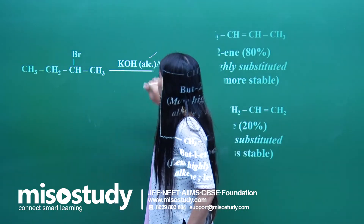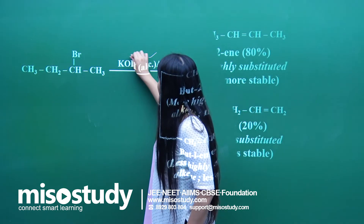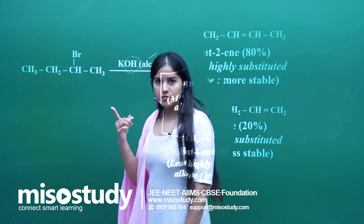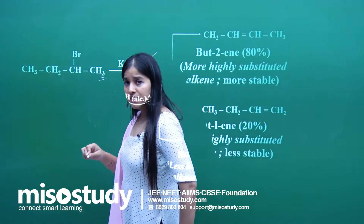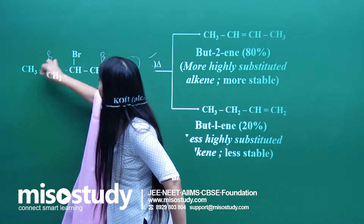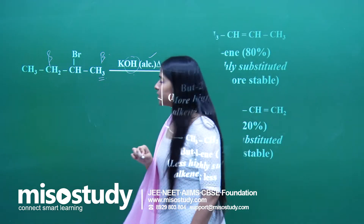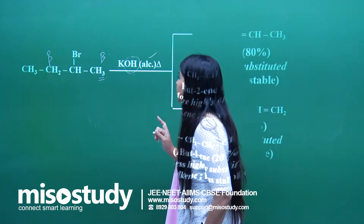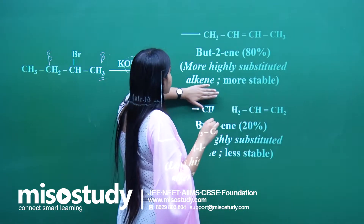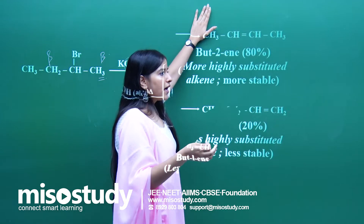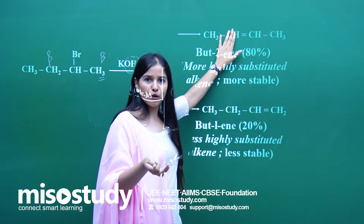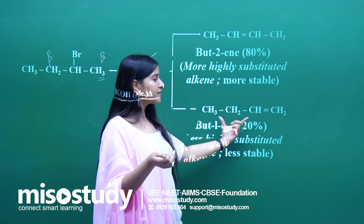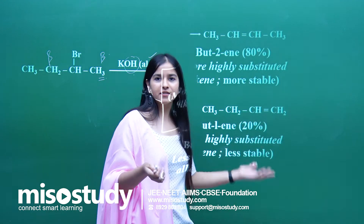With a strong base, elimination will occur — the base will abstract the weakly acidic hydrogen. Since we are dealing with beta hydrogens, there are two possibilities. The question is which product will be more favorable. As per the Zaitsev rule, the highly substituted product is preferred. This is driven by stability: more hyperconjugated structures are possible for the more substituted alkene.